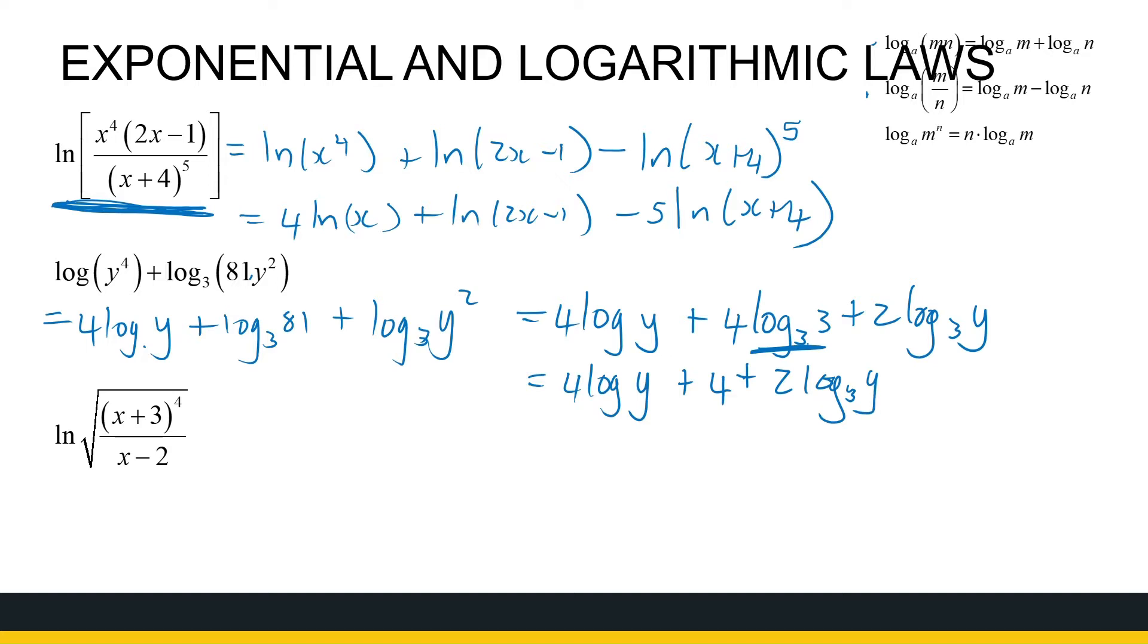All right, the last one, I've got ln again, and want to take it apart again, but what you need to notice, I've got a fraction and a root, so that's the same as ln of that whole thing to the power of half, so that's a half ln of that whole thing. Now if I take that apart, using our laws on the right-hand side, that's a half ln of x plus 3 to the power of 4 minus ln of x minus 2.